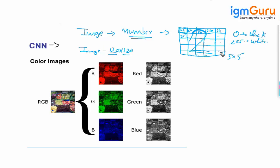This is how we represent an image in numeric form. Once we convert the image into numbers, we can pass it to our network. This is how we convert a black and white picture to its corresponding numeric representation. The second thing is how to handle a color image.